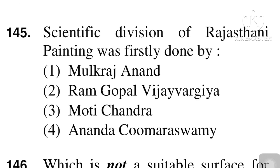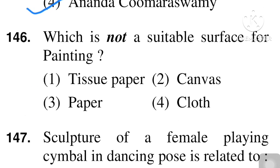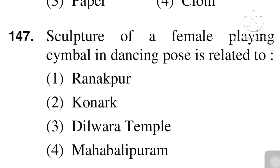Next question: scientific division of Rajasthani painting was first done by — Anand Coomaraswamy, option number four. Next question: which is not a suitable surface for painting — tissue paper, canvas, paper, or cloth? Tissue paper is the answer. Next question: sculpture of a female playing a musical instrument in dancing pose is related to — Ranakpur, Konark, Dilwada temple, or Mahabali? Option number two, Konark, is the right answer.